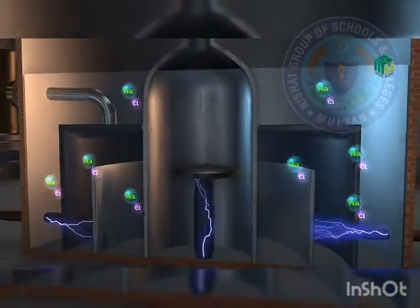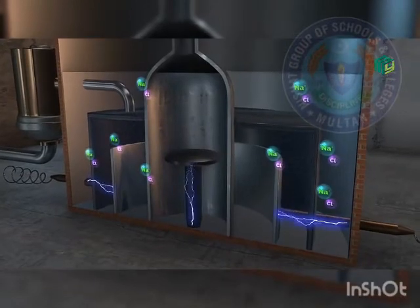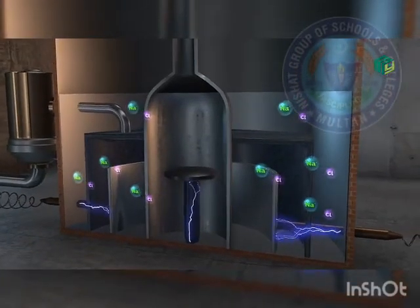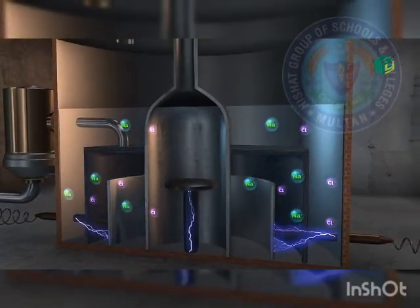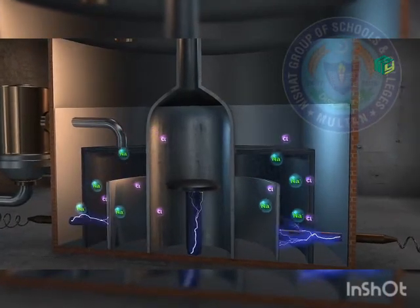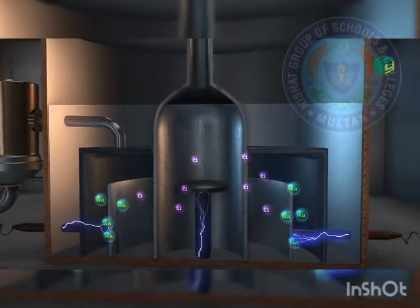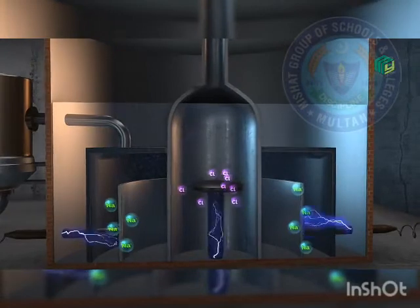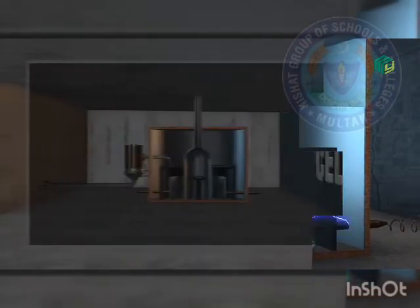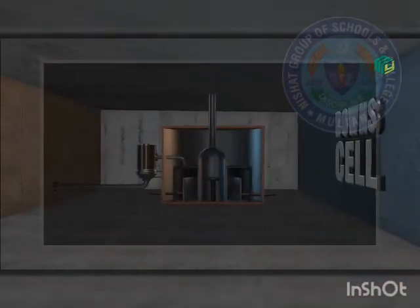Jab electric current pass kiya jata hai anode aur cathode mein se, to kya hota hai ki sodium cations they move towards the cathode and chloride anions they move towards the anode. Jaise ki aap dekh rahe hain sodium ions cathode par chale gaye hain aur chloride ions anode par.